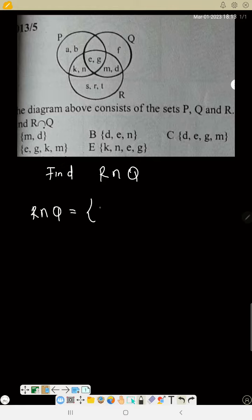This is R intersection Q only. There must be only R intersection Q only, that is that place.